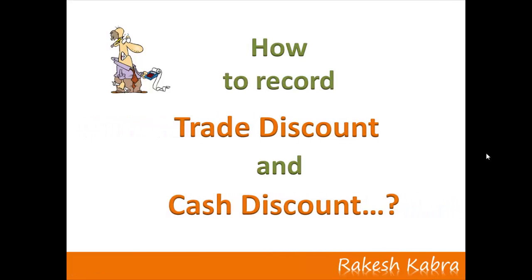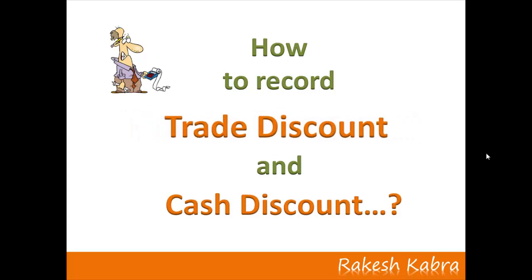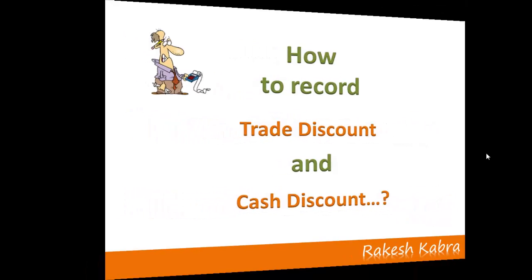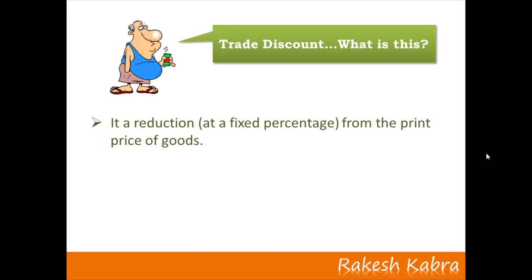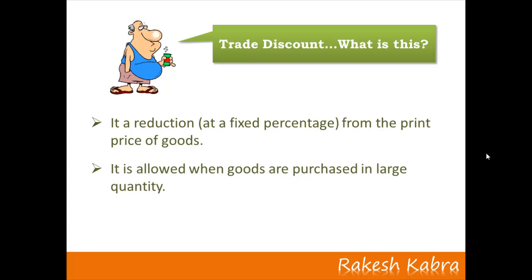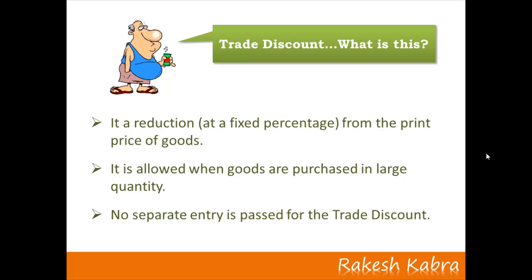Today we will discuss how to record trade discount and cash discount. Trade discount is a reduction from the print price of goods. It is allowed by the wholesaler or manufacturer to the retailer on purchases of goods in large quantity. The important thing about trade discount is that it is not recorded in the books of accounts — no separate entry is passed for the trade discount.